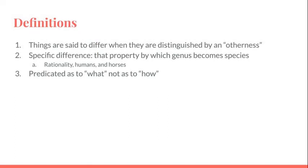What's important here though is specific differences, not just otherness in general. So a specific difference is that property by which genus becomes species. So if you think about the genus animal, the specific difference which marks humans off from other animals is rationality. Other animals have different specific differences, but humans are rational.